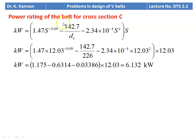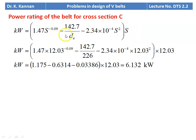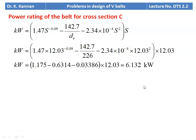We calculate the power rating of the belt for section C. The equation from the PSG data book: power = 1.47S^(−0.09) − 142.7/De − 2.34×10^(−4) × S² multiplied by S. Substituting S = 12.03 m/s and De = 226 mm, the power rating of the belt = 6.132 kW.